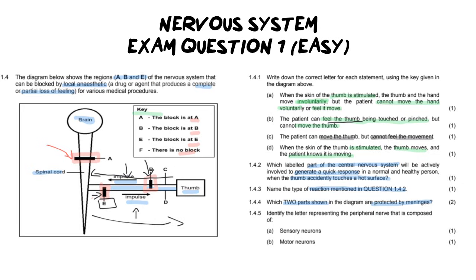And then number five says identify the letter representing the peripheral nerve that is composed of, and then sensory and motor. The funny thing is, is that if you didn't know these two answers way in the beginning, you wouldn't have been able to answer question number one. But just as a recap, so that we know which one is which, the sensory neuron is always going to be the neuron that is going from the receptor, which in this case is the thumb. So that means it is going to be letter C.